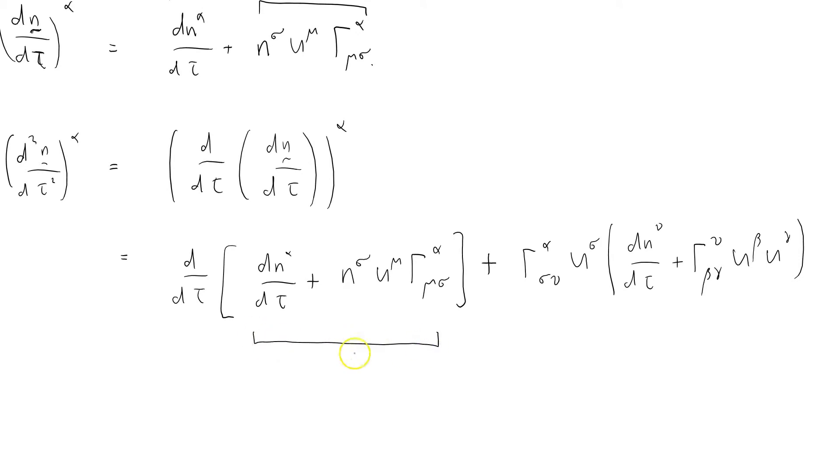This term here is simply d n by d tau. This term here is the correction that we need. So I'm just taking this term, which is basically equal to d n by d tau. All I'm doing is using the definition of the Christoffel symbol to account for the change of coordinate bases as we move through space time.